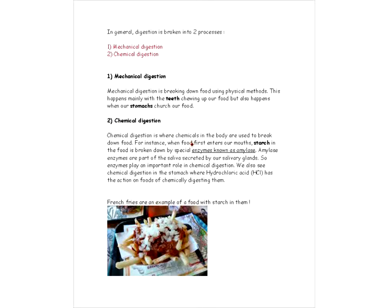Chemical digestion is, of course, as the name suggests, where chemicals in the body are used to break down food. So when food first enters our mouth, starch in the food is broken down by special enzymes known as amylase. Amylase enzymes are part of the saliva secreted by our salivary glands. So enzymes play an important role in chemical digestion. We also see chemical digestion in the stomach where hydrochloric acid or HCL has the action on foods of chemically digesting them. Alright, so we talked earlier about starch being broken down by amylase in our mouth, and French fries are an example of food with a lot of starch in them.